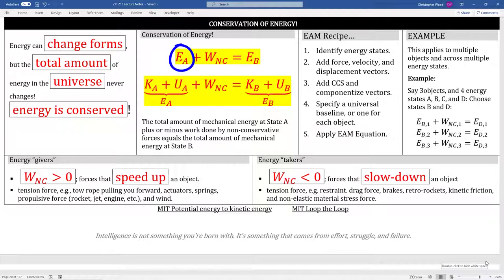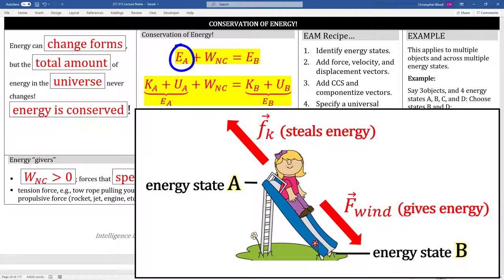So, your job is just to tally up the total amount of energy that exists at a given energy state. Let's call that energy state A. Think of a person sitting at the top of a slide. You then need to analyze non-conservative work. And remember, non-conservative work can bring energy into the system or steal energy from the system. On the right side, you have the energy at state B. Think of the person at the bottom of a slide. As this person is going down the slide, maybe they encounter friction, which steals energy from the system. But at the same time, maybe there's a gust of wind at their back, which adds energy to their system. Your job is just to systematically keep track of what's happening.